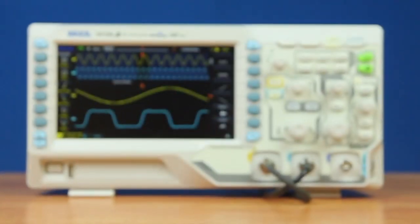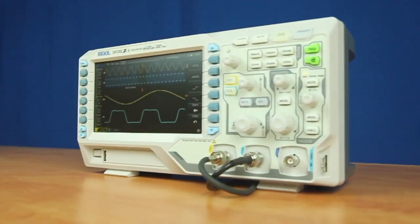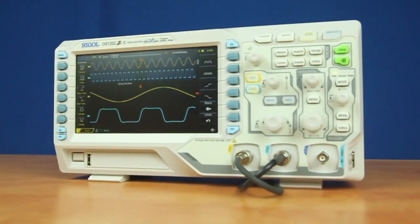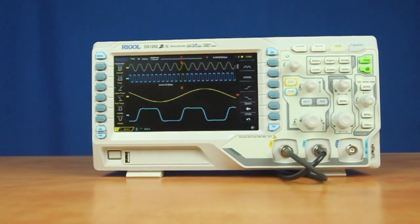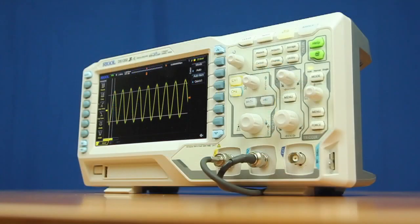Rigol's most popular oscilloscope is now extended to 200 megahertz. The new DS1202Z-E is built on the same platform as the DS1000Z family. This two-channel oscilloscope extends the bandwidth and rise time capabilities to address your electronic testing, design, and debug challenges.